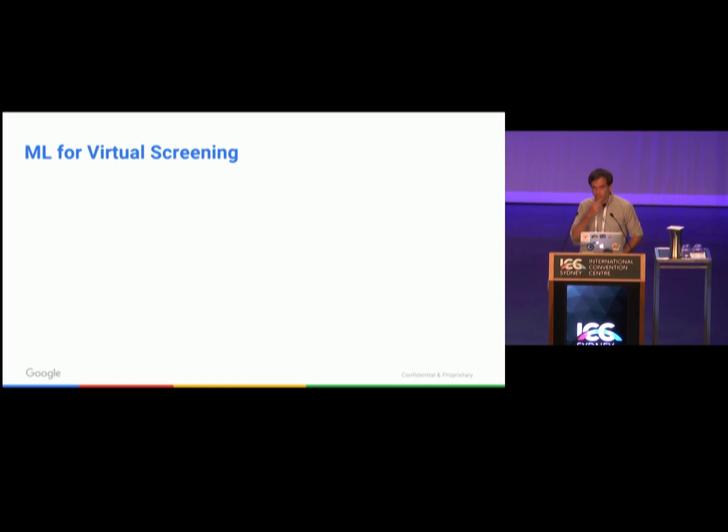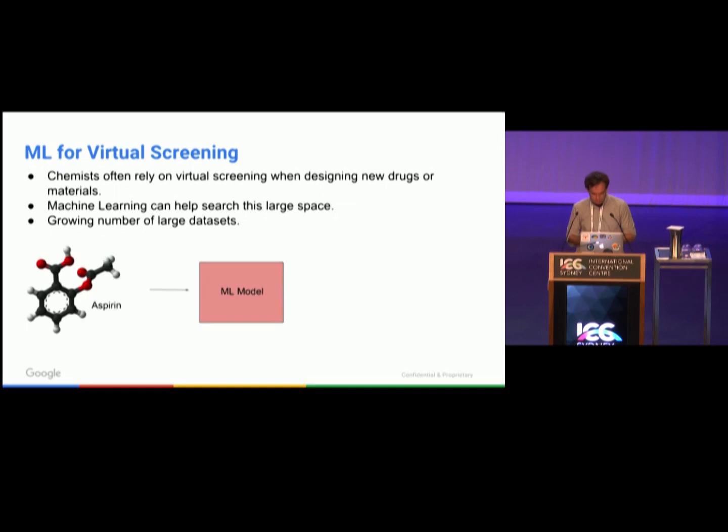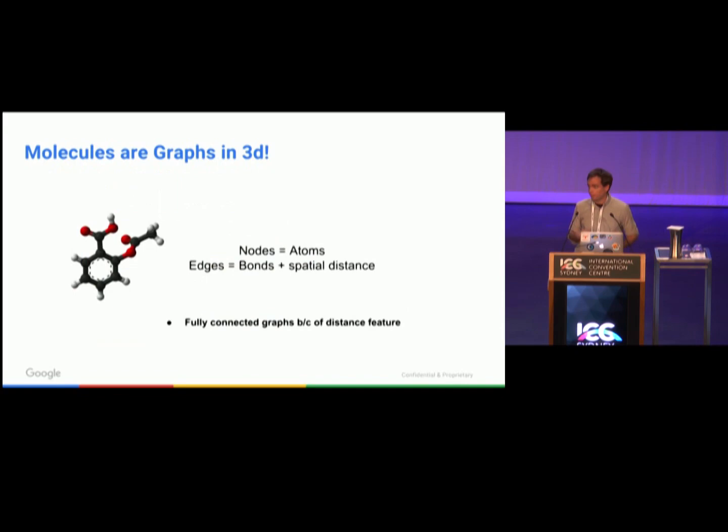I first wanted to begin by just motivating machine learning for virtual screening. When chemists are designing new drugs and materials, they're searching a practically infinite space of potential molecules. They don't have time to synthesize every molecule and often rely on computer simulation to narrow down promising candidates. This is a really important potential application for machine learning. There's a growing number of large datasets of molecules. As we design better machine learning models and get more data, we can design models which can predict if molecules are toxic to humans or whether they bind with a given protein, which is what you would do for drug discovery, or predict quantum properties of molecules which are also used in material design and new drugs.